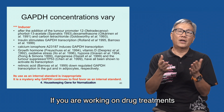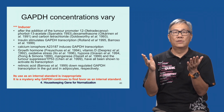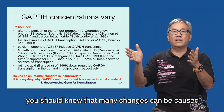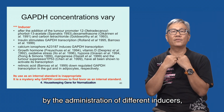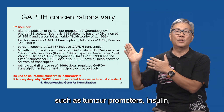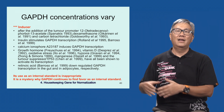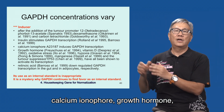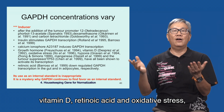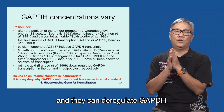If you are working on drug treatments or hormone control, you should know that many changes can be caused by the administration of different inducers such as tumor promoters, insulin, calcium, IL-4, growth hormone, vitamin D, retinoic acid, and oxidative stress — and they can deregulate GAPDH.